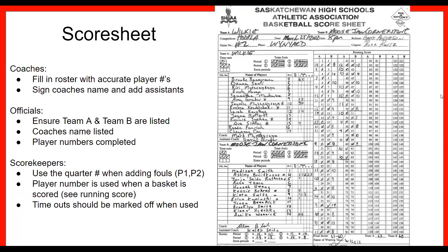On the bottom, the coaches have signed off as well. There's a section for timeouts — the first row is the first half, so you can have two timeouts in the first half. The next row has three boxes for three timeouts in the second half. The bottom ones are for concurrent overtime periods — one timeout per overtime. Those are what those marks are for.